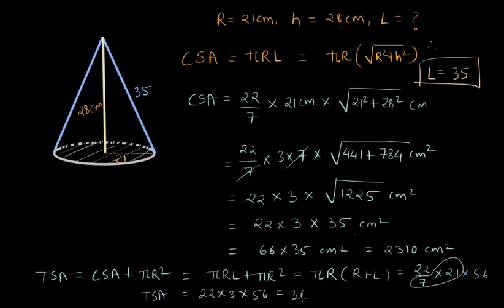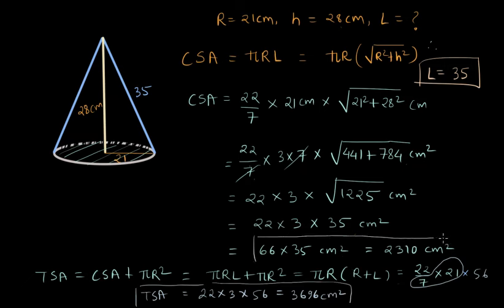This gives TSA = 3696 centimeters squared. To summarize: the curved surface area of the cone is 2310 cm², and after adding the area of the circular disc at the bottom, the total surface area of the cone is 3696 cm².